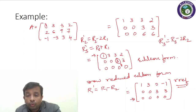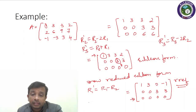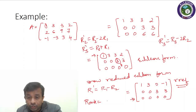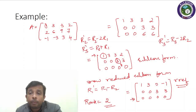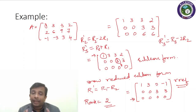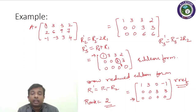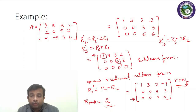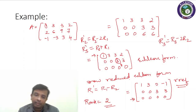Since row three is an all-zero row, the rank of the matrix is the number of nonzero rows, which is 2. I hope the concepts of echelon form, row reduced echelon form, and rank of a matrix are clear. In case of any doubts, feel free to write in the comments and I will try to resolve them in subsequent videos. Thank you for your attention — happy viewing and happy learning.